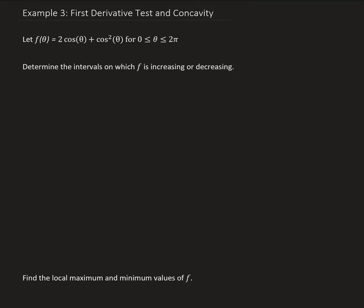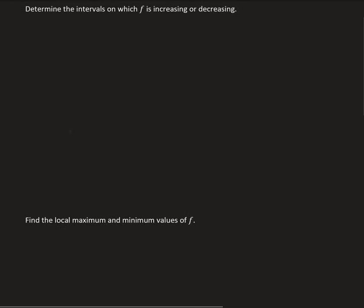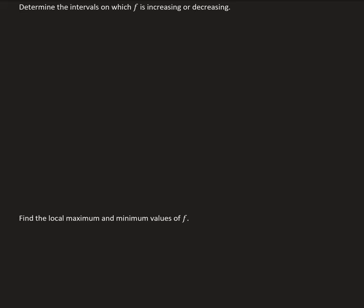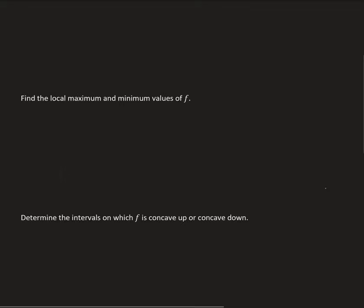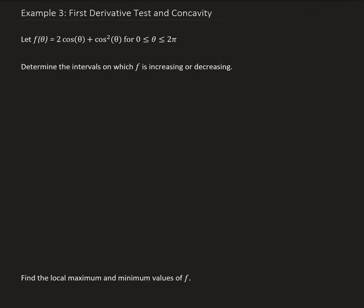In this example we want to determine the intervals on which the function is increasing or decreasing. Using the first derivative test we can find the local maximum and local minimum values of our function. Using the second derivative we can determine the intervals on which the function is concave up or concave down, and from there we can find the inflection points. The function we're given is 2 times cosine theta plus cosine squared theta, defined on the restricted domain from 0 to 2π.